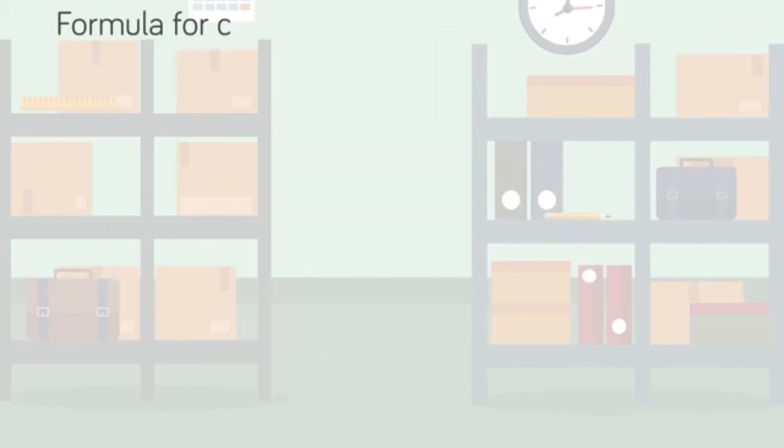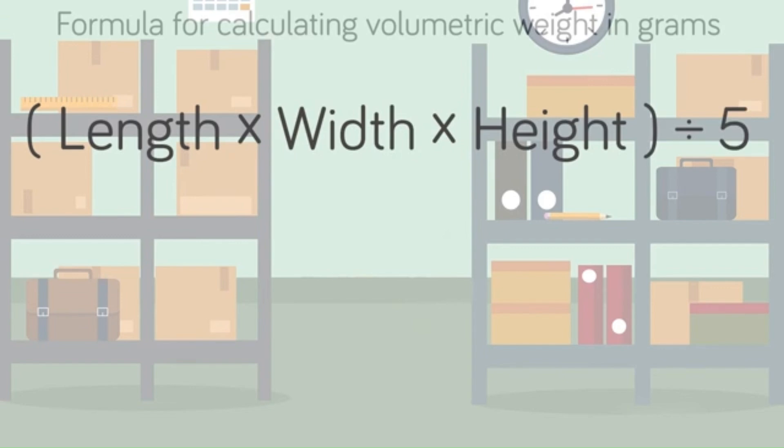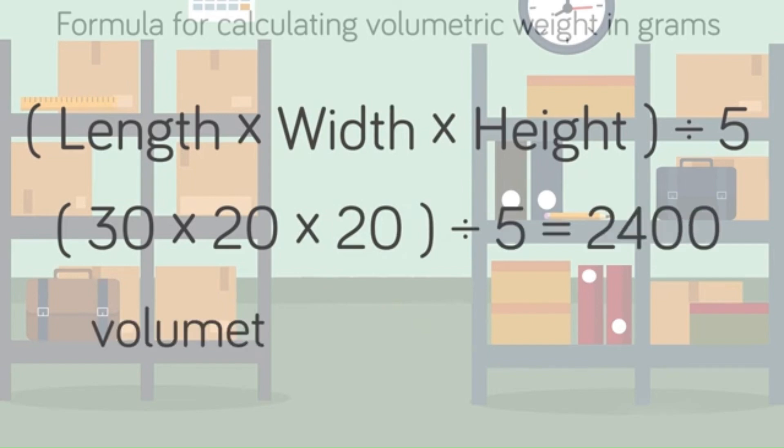So now, the formula to calculate volumetric weight in grams is length into width, multiply by height, and divide by 5. So with dimensions 30 multiply by 20, multiply by 20, divided by 5, equals 2400 grams.